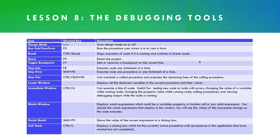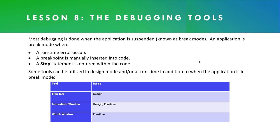This slide provides a further description of the debugging tools, their shortcut keys, and a comprehensive description of each tool. Most debugging is done when the application is suspended, which is known as break mode. An application enters break mode when a runtime error occurs, a breakpoint is manually inserted into the code, or a Stop statement is entered within the code. Some tools can be utilized in design mode and at runtime in addition to break mode. For example, Step Into can run in break mode and design mode; the Immediate window in break mode, design mode, or at runtime; and the Watch window in break mode and runtime.